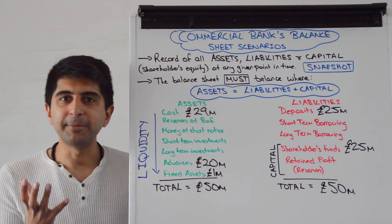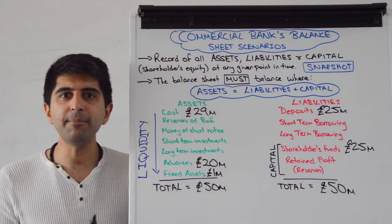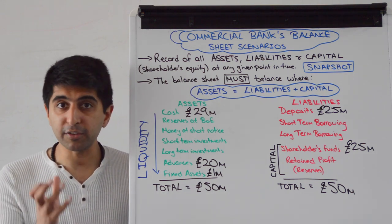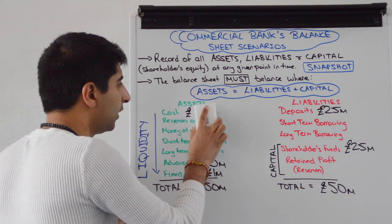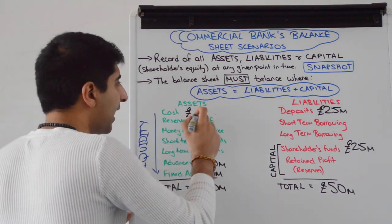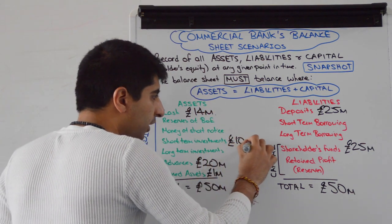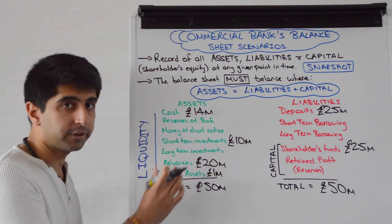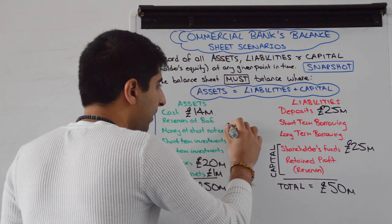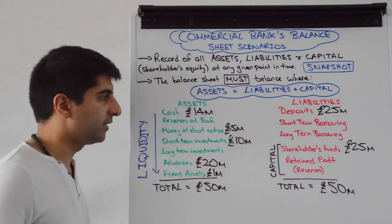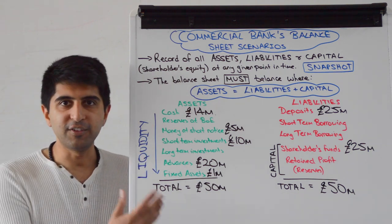The bank now decides to buy up 10 million pounds worth of short-term government bonds and also to lend 5 million pounds out in the interbank lending market. That's 15 million pounds in total taken off cash, leaving 14 million pounds. 10 million pounds of short-term government bonds are recorded as short-term investments, and 5 million pounds lent in the interbank lending market goes into money at short notice. We have a balanced balance sheet of 50 million and 50 million.